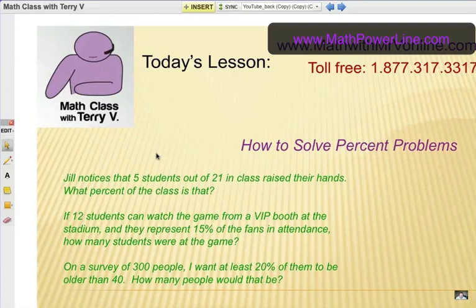Take a look at these three examples. Jill notices that 5 students out of 21 in class raised their hands. What percent of the class is that? Or, if 12 students can watch the game from a VIP booth at the stadium, and they represent 15% of the fans in attendance, how many students were at the game. And the last example is, on a survey of 300 people, I want at least 20% of them to be older than 40. How many people would that be?